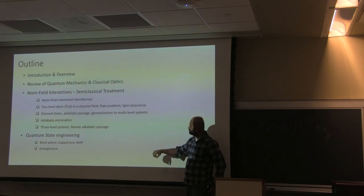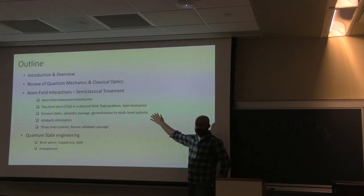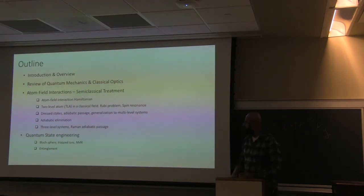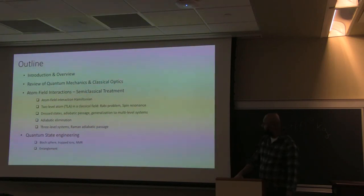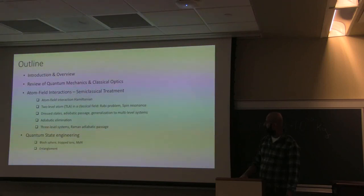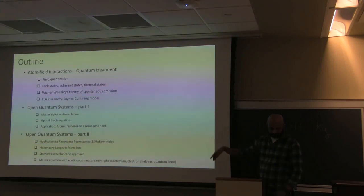This involves topics like Rabi oscillations and spin resonance, and then we'll generalize to multi-state systems. We'll talk about dressed states, adiabatic passage, and adiabatic elimination. Then I'll cover the initial basics of quantum information science — quantum state engineering, things like the Bloch sphere, entanglement, and qubits.